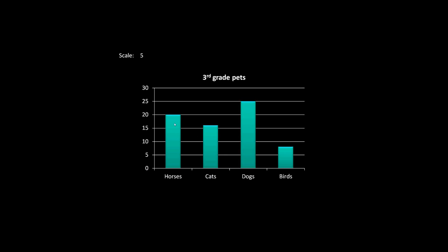There are a couple of things we can tell about this graph. Horses and dogs end right on a line, so horses are twenty and dogs are twenty-five. Cats goes above the fifteen line, but without any indicator markings it's ambiguous — it could be a sixteen or seventeen. We could probably estimate about sixteen. Birds is similarly unclear — is that seven, eight, nine? It's ambiguous and doesn't tell us exactly without secondary grid lines. We could estimate about seven or eight. For dogs versus horses, we can see the difference is exactly five since we're counting by five — five more people have dogs than horses.